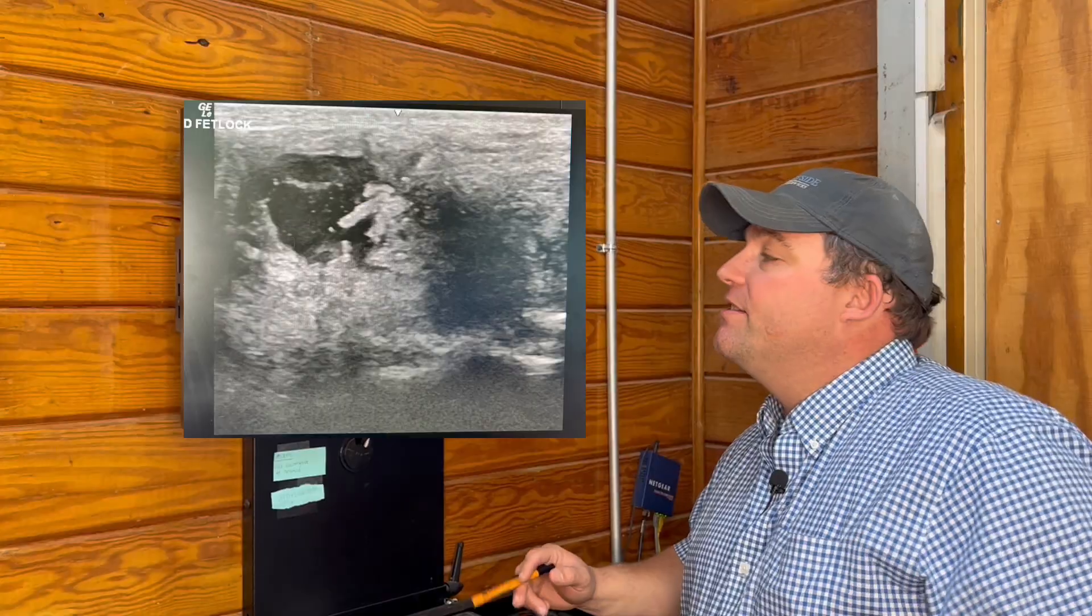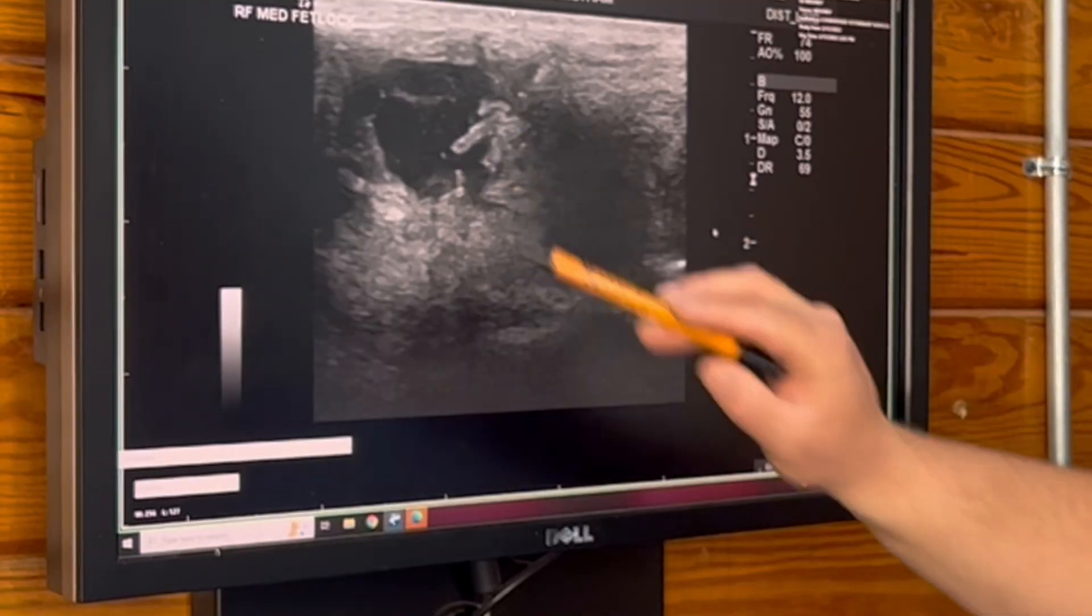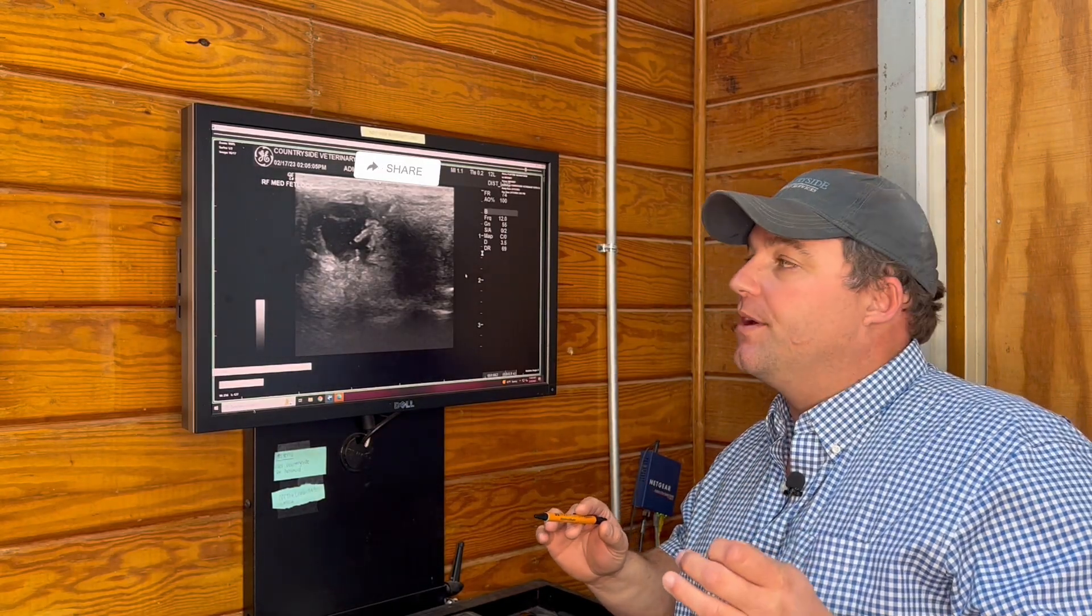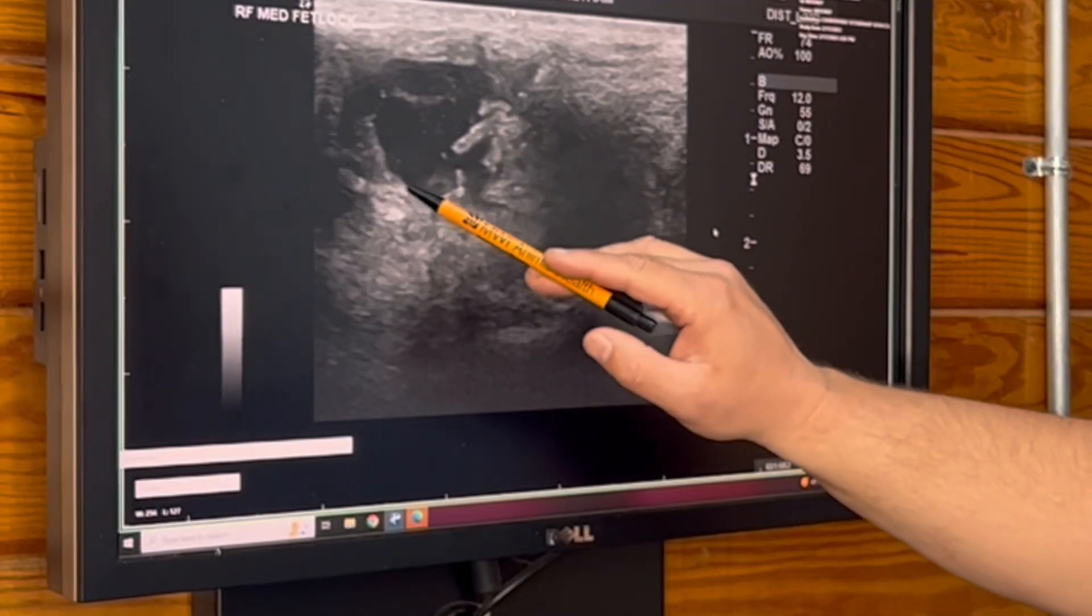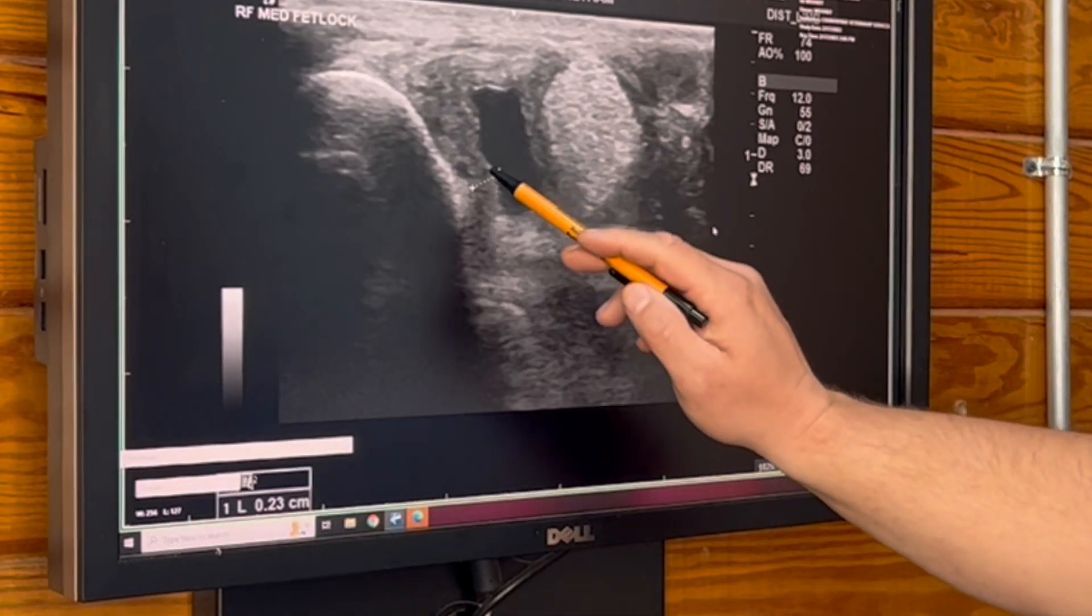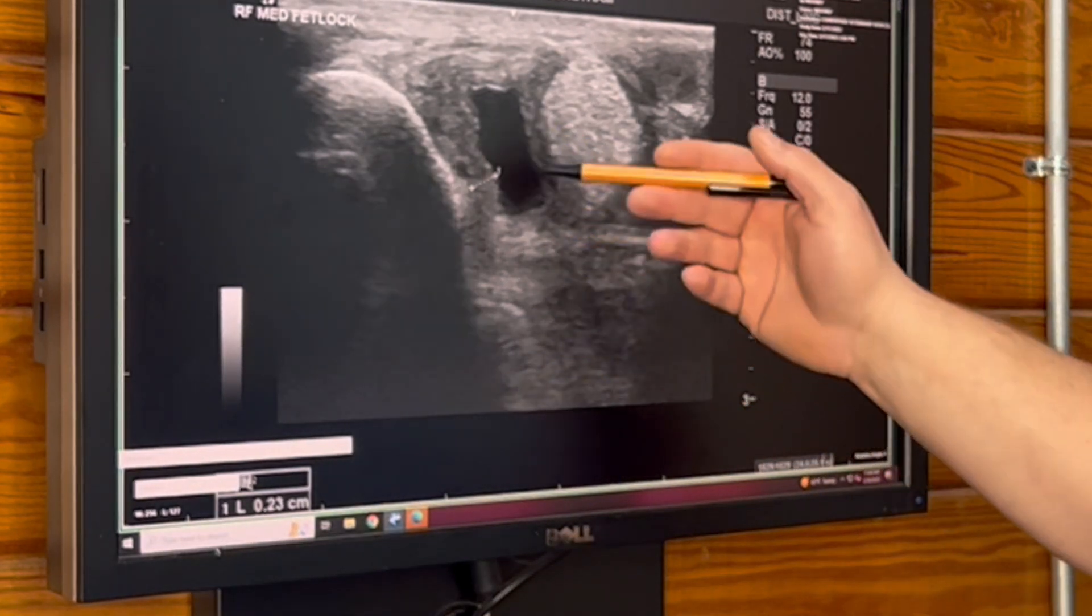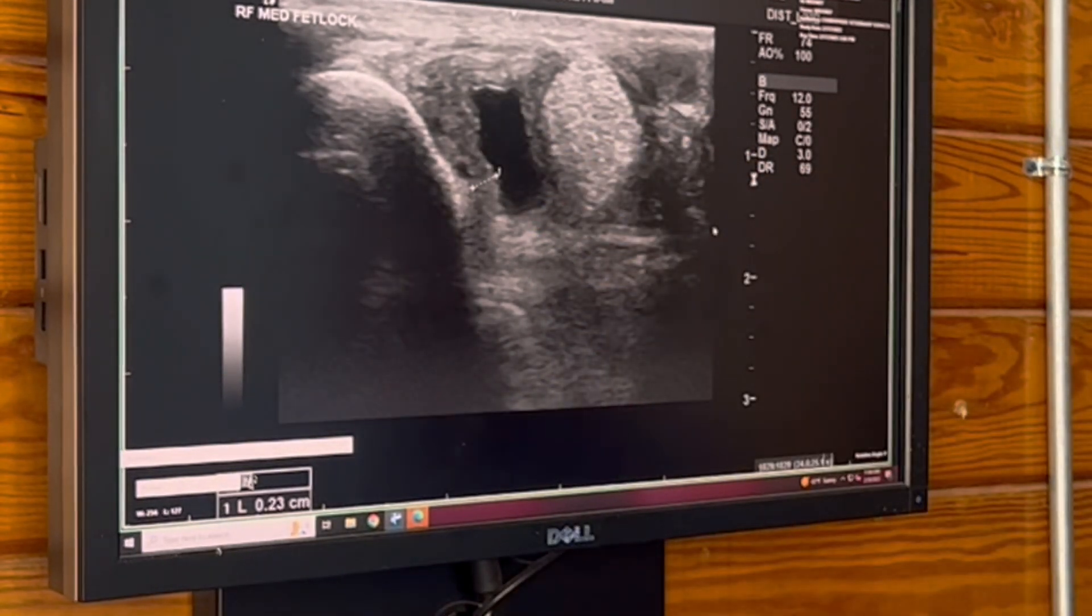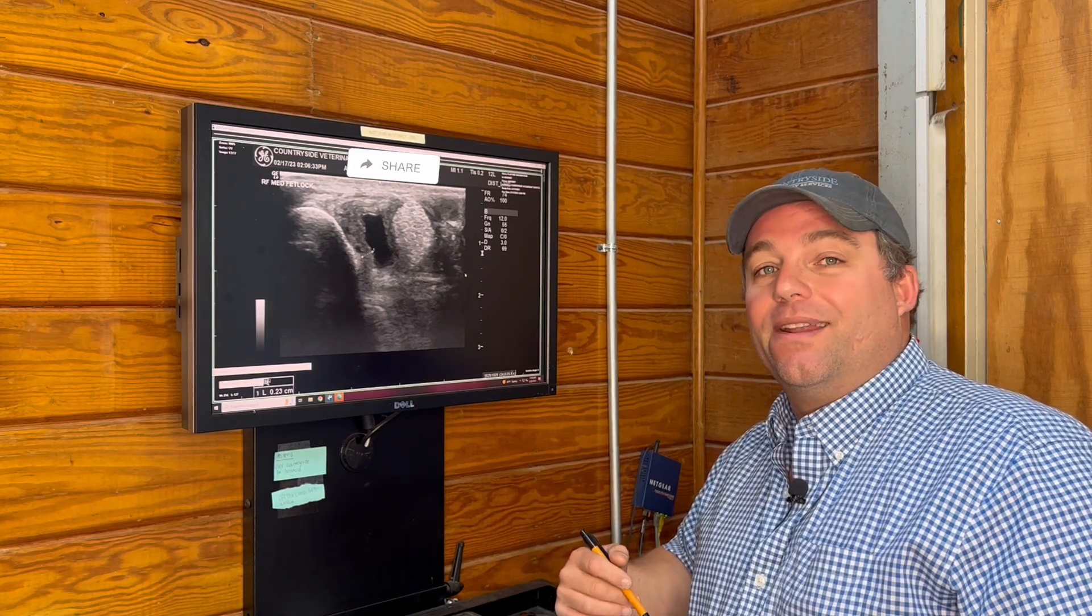This is an ultrasound of the palmar pouch of the fetlock joint. What you're seeing here are those thick synovium. Typically on ultrasound, these are very small and difficult to pick up, but here they've become very thick. In another view, you can see the joint capsule. Notice there's no synovium - this joint has been inflamed long enough that the joint capsule has gotten incredibly thick and we've actually lost some of those synovium. We're losing our ability to produce healthy joint fluid in this joint.